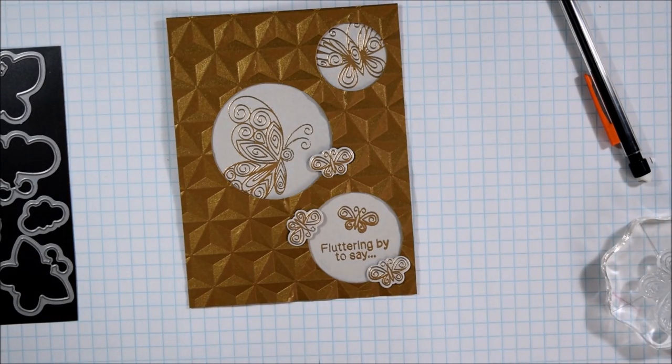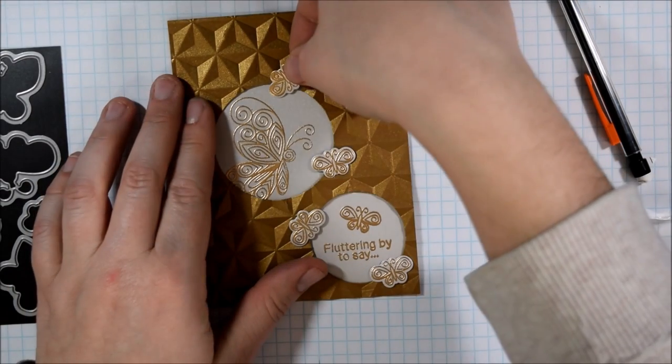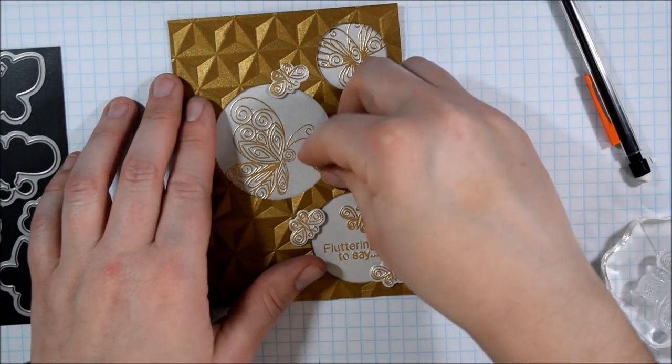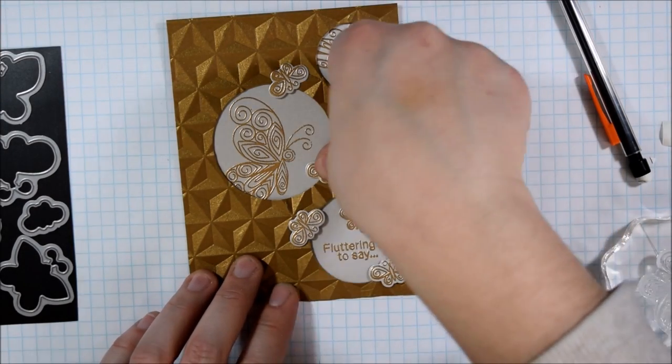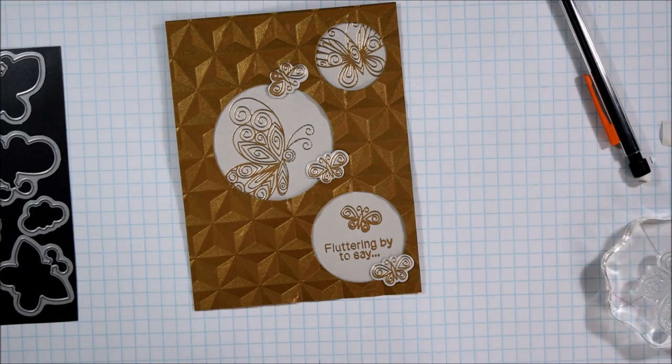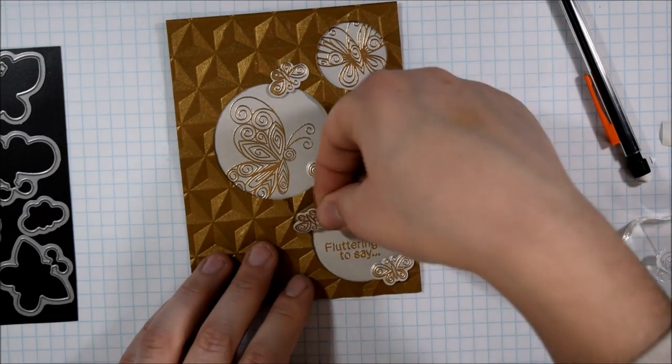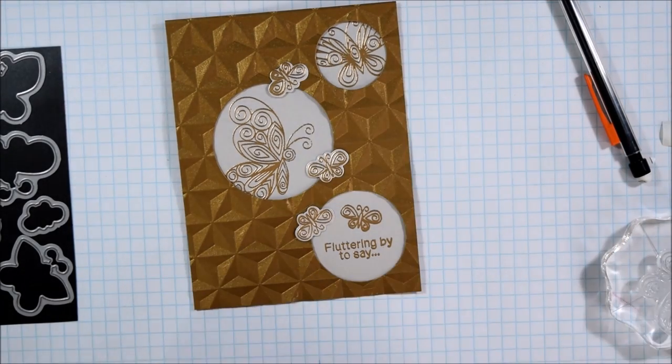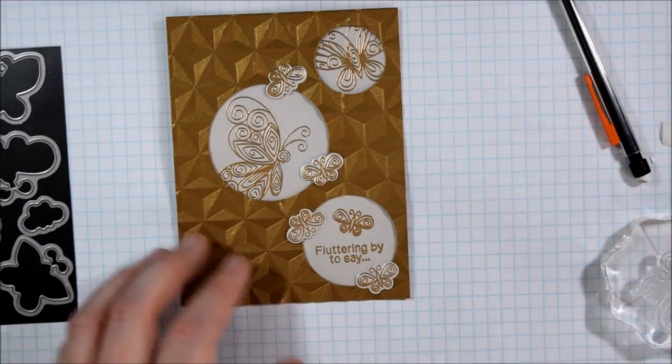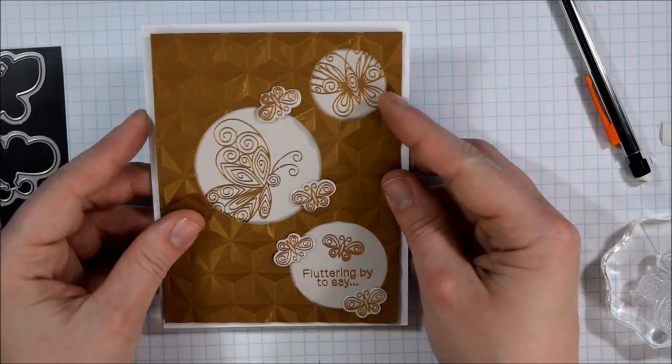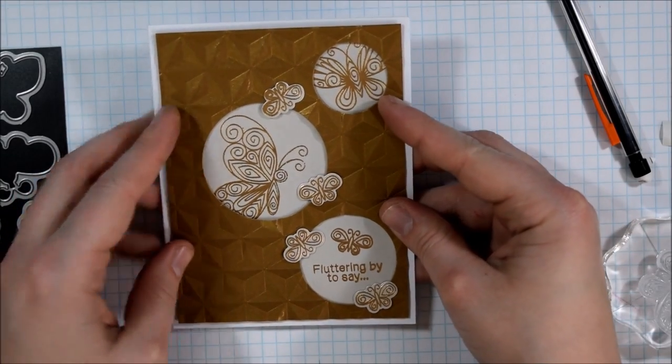But I was kind of having a hard time with that because I was like, well there already is one little butterfly in the sentiment panel, so does that count as one of the bunch or should I add like three extra or four extra because is he part of the odds? But in the end I think that it turned out nice and I really don't think that most people who receive these cards can be like 'well I'm sorry but there is not an odd number of embellishments, so reject.' And that is it for my card today.